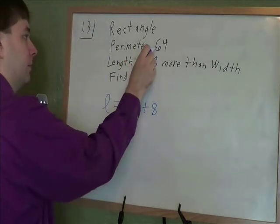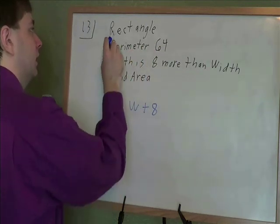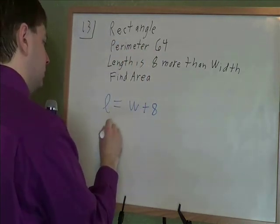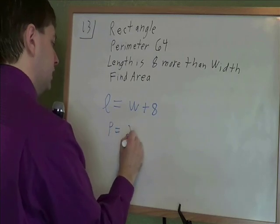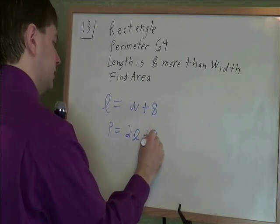And then because I know the perimeter, I'm going to use the formula for that. In a rectangle, the perimeter equals 2 times the length plus 2 times the width.